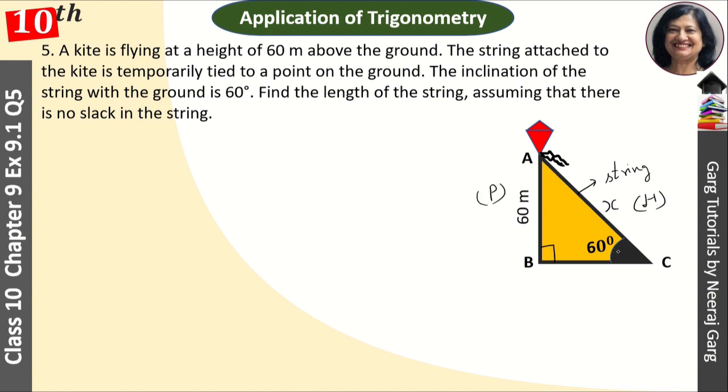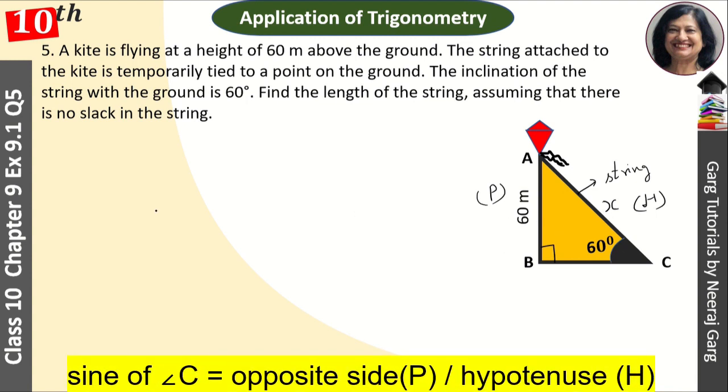For this 60 degree angle, what is the trigonometric ratio we will use here? Here we will use sin 60 degrees. And what is the formula of sin?